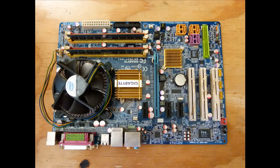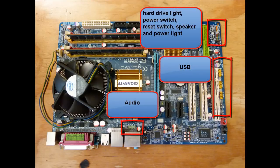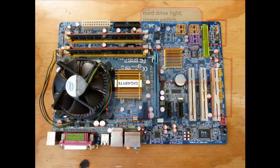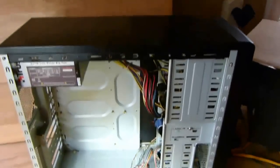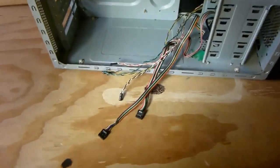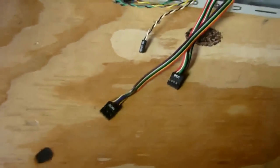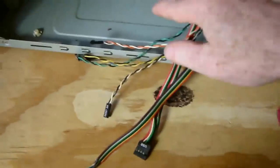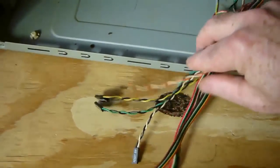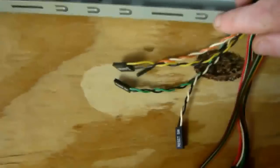In this video I'm going to show you how to connect the front panel connectors of the desktop tower unit to the motherboard. This is what the connectors look like coming from the desktop tower unit. You have hard drive LED light, power switch, reset switch, speaker, and power light.